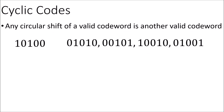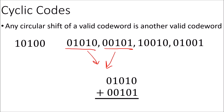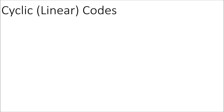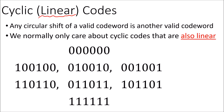Notice, however, that the sum of these two valid codewords gives us an invalid codeword that isn't part of the code. So cyclic codes are not necessarily linear. That said, for all practical purposes in real life, we're mostly interested in cyclic codes that are also linear codes. So here's an example of a collection of valid codewords where all cyclic shifts result in other valid codewords, and adding any two valid codewords results in another valid codeword. So this is a code which is both linear and cyclic.